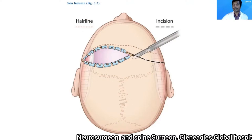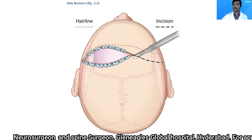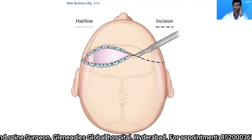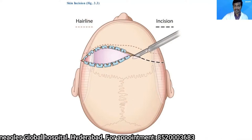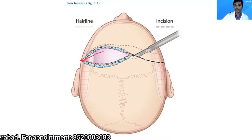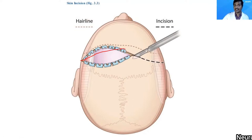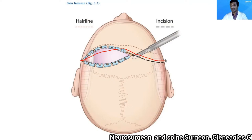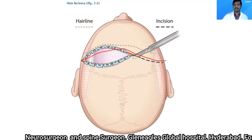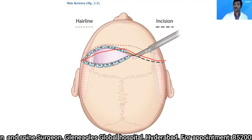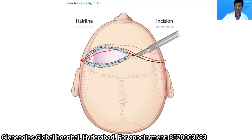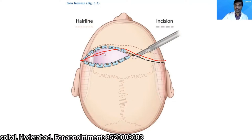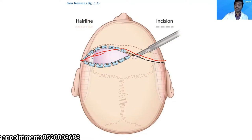We take a bicoronal skin incision. The incision starts from the zygomatic arch on one side, at least one segment in front of the tragus. It goes along just behind the hairline, reaches the midline, and then mirrors back to the opposite side. I use a number 15 surgical blade to incise the skin down to the level of the pericranium above the superficial temporal line, and below the superficial temporal line I take the skin incision down to the level of the temporalis fascia.